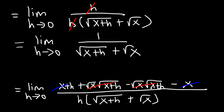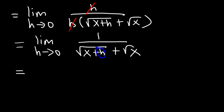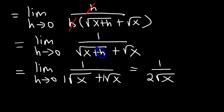So we're left with the limit as h approaches 0. Now what we need to do is direct substitution — replace h with 0. So x plus 0 will simply be x. The square root of x plus the square root of x — there's a coefficient of 1, and 1 plus 1 is 2. So you should get 1 over 2 square root of x.